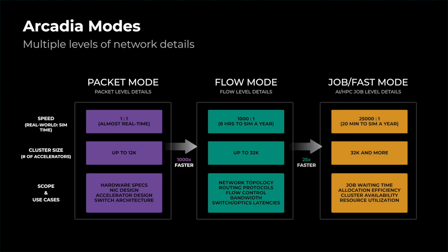Since Arcadia is covering many different aspects of the AI training cluster, it is important to tailor it for different use cases. Therefore, we provide three modes that cover different levels of detail. We have packet mode using a packet-level network simulator, which captures all hardware details. We also have a flow mode using a flow-level simulator, which can capture the difference between topology, routing, and basic flow control algorithms. And there is also a job mode, or fast mode, where we only care about high-level job placements and the network, compute, and memory details are all ignored.